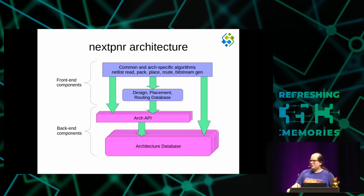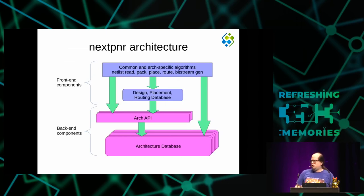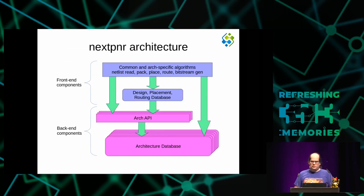A few words about the overall architecture of NextPNR. We have front-end components, some common and shared between architectures, others architecture-specific. For example, the code that reads a netlist is common across all architectures. But the packer — where we take individual lookup tables and pack them into larger logic cells — is architecture-specific; every architecture needs its own packer. We design NextPNR to move as much code as possible into the common bits and reuse them, while providing infrastructure that makes it fairly easy to write architecture-specific components.